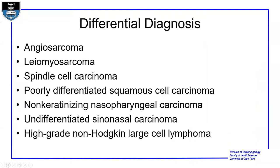The differential diagnosis is quite wide. It includes angiosarcoma, leiomyosarcoma, spindle cell carcinoma, poorly differentiated squamous cell carcinoma, non-keratinizing nasopharyngeal carcinoma, undifferentiated sinonasal carcinoma, and high-grade non-Hodgkin large cell lymphoma.